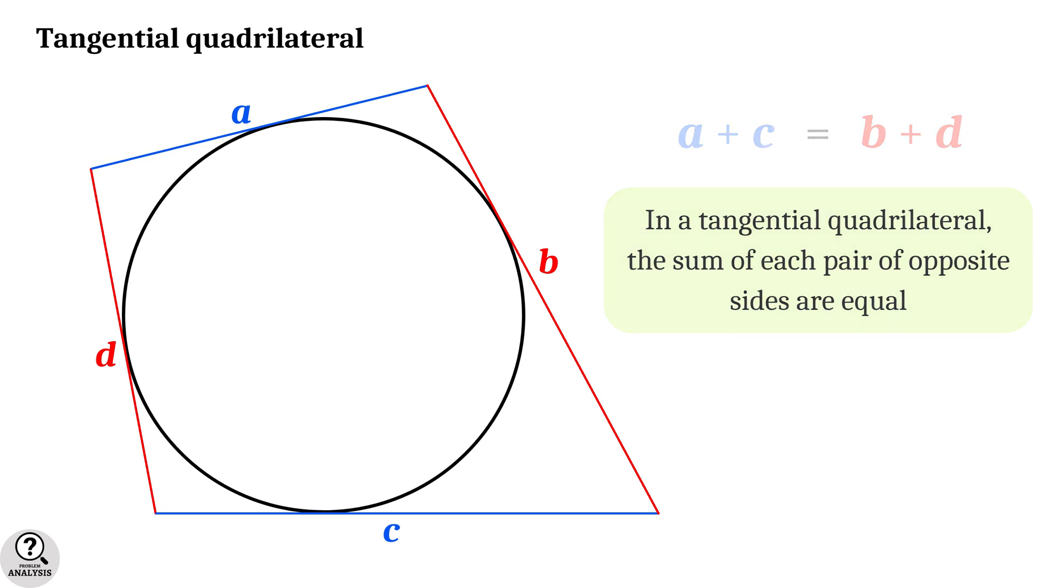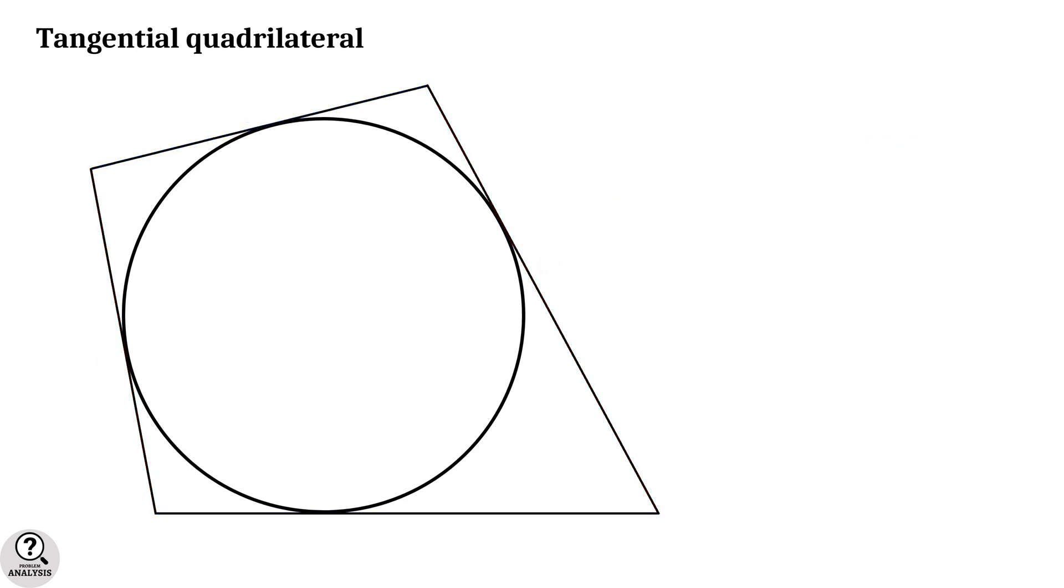The reason is very simple. Let's denote the quadrilateral by A, B, C, D. Now mark the touching points of each sides. First consider these two parts. As you can see, they are tangents to the circle drawn from a single point. And hence they are equal. Let's say it is x1.